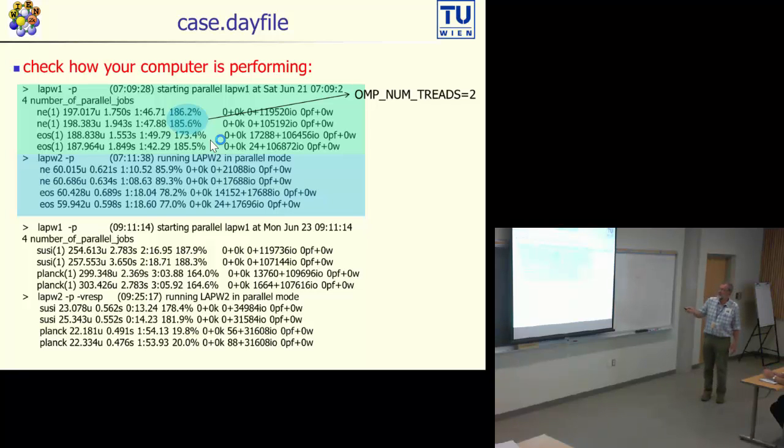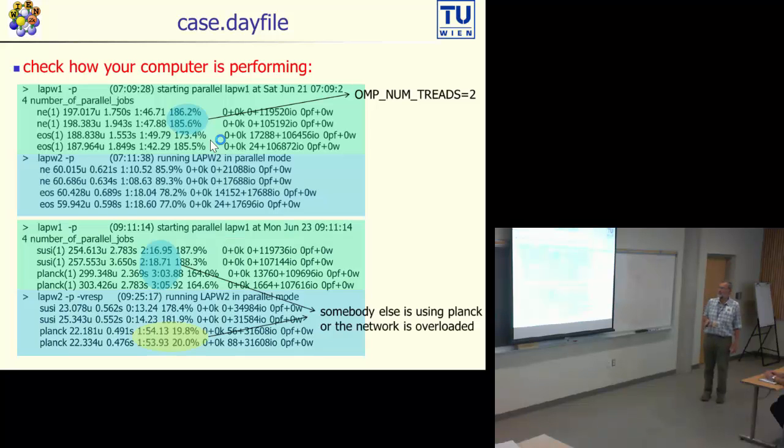However, in this example two days later, I used similar machines. They should be all equivalent. Then when I looked at the dayfile, I found out Suzy needed two minutes 16 seconds, but Planck needed three minutes. So this is not the same anymore. That means Suzy was idling for almost one minute until finally Planck was finishing. And even worse, lapw2, which is usually much smaller time than lapw1, was suddenly using on Suzy 13 seconds, almost nothing, but on Planck it was using one minute and 50 seconds. What was going on? Somebody else was starting to use this computer named Planck, or the network of Planck was completely overloaded or whatever.